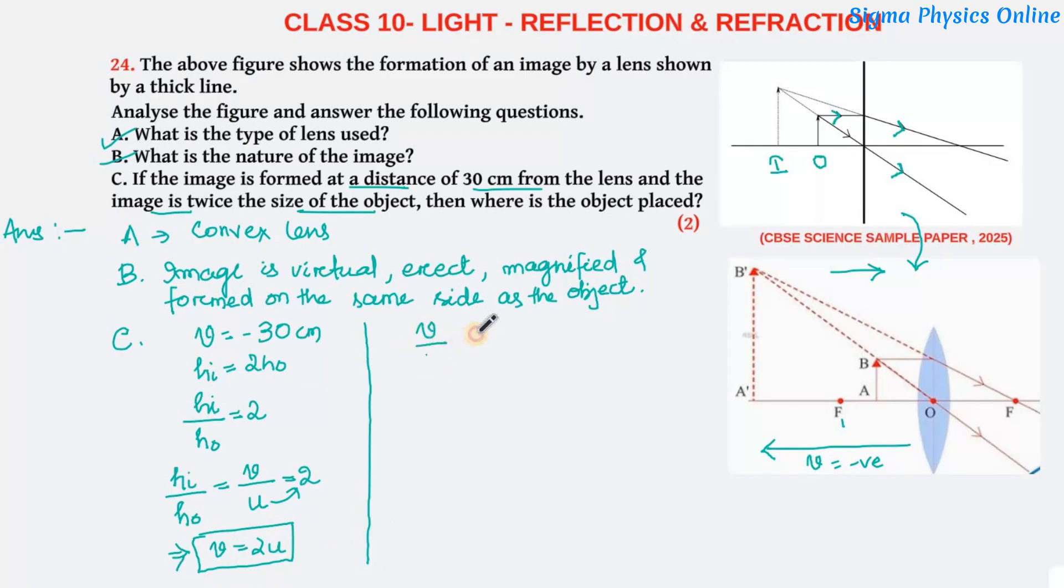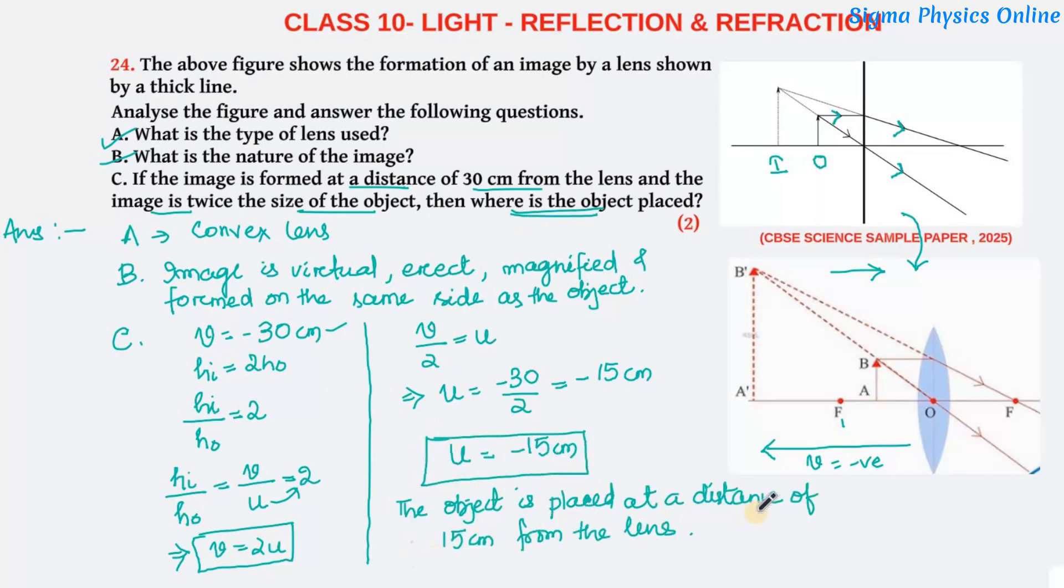So U equals V by 2. V is minus 30 centimeter, so U equals minus 30 by 2, which is minus 15 centimeter. Hence the object distance U is minus 15 centimeter. So the object is placed at a distance of 15 centimeter from the lens. This is the solution to this question. I hope you've understood it.